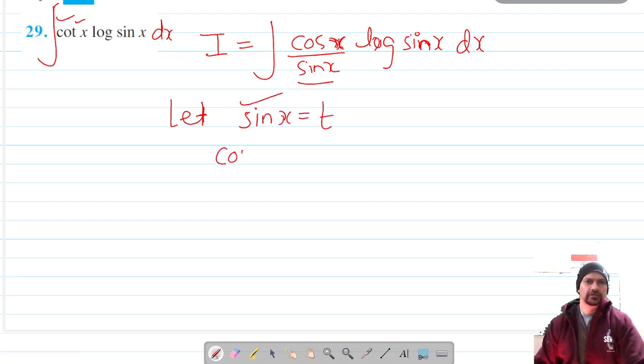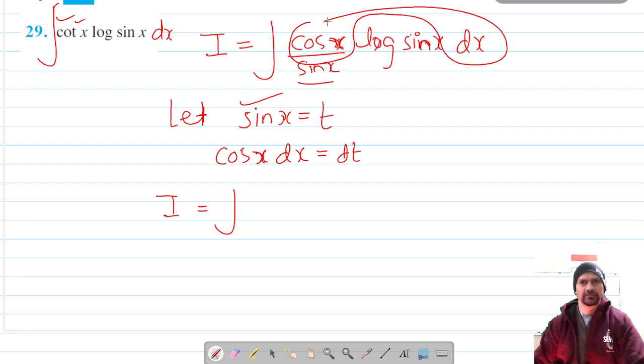Differentiation of sin x is cos x, so cos x dx = dt. Now our integral becomes log t dt, where sin x = t. But our purpose is not solved yet because we still need to handle the log t term.